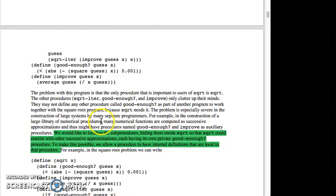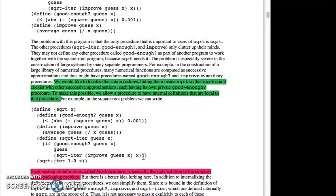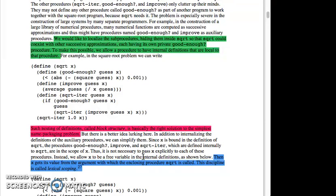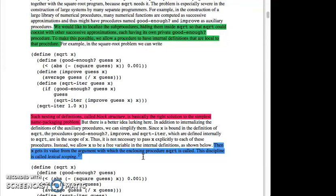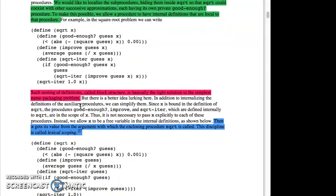For example, in the construction of a large library of numerical procedures, many numerical functions are computed as successive approximations and thus might have procedures named good enough and improve as auxiliary procedures. We would like to localize the sub-procedures, hiding them inside square root so that square root could coexist with other successive approximations, each having its own private good enough procedure. To make this possible, we allow a procedure to have internal definitions that are local to that procedure. For example, in the square root problem, we can write define the square root of x, good enough, guess x less than... Such nesting of definitions is called block structure.